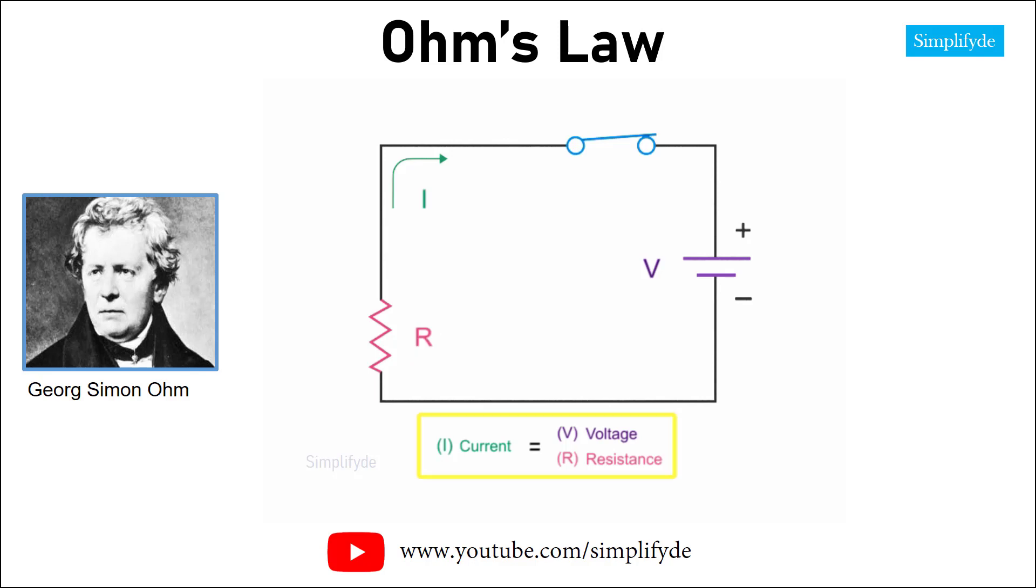This form of the Ohm's law equation allows you to calculate current when voltage and resistance are known.